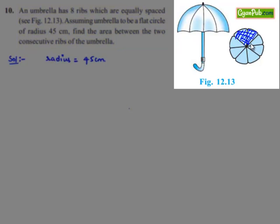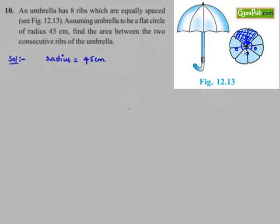If we consider the circular path, the shaded region subtends a certain angle which will be similar to the angle subtended by the other consecutive ribs. Total there are four equal angles subtended by two ribs each at the center. Let that angle be theta.